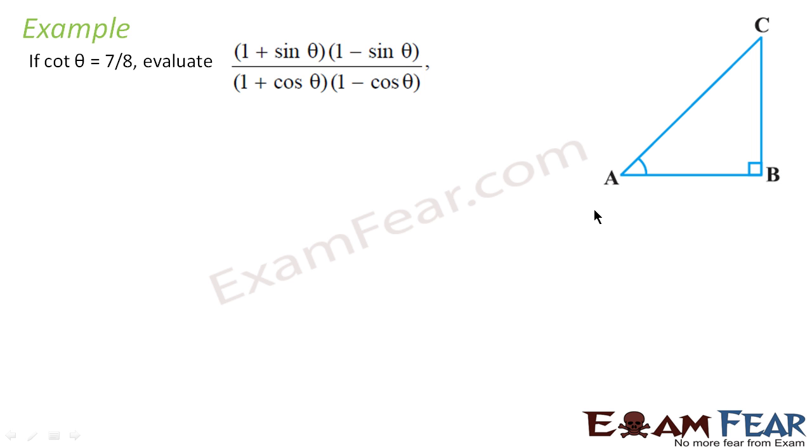The question says cot θ is equal to 7 by 8. We have to find (1 + sin θ)(1 - sin θ) by (1 + cos θ)(1 - cos θ). Again, we use the same formula here.